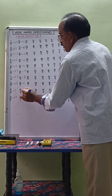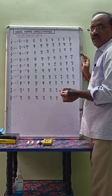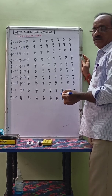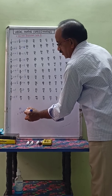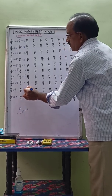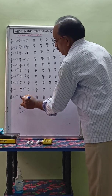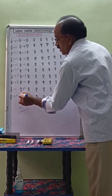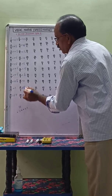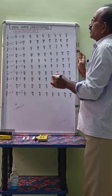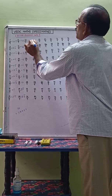19 by 9 equals 2.1 bar. Sum of the digits, digital sum: 1 plus 0 equals 1, that means 2.1 bar. 20 by 9 equals 2.2 bar. Sum of the digits, digital sum: 2 plus 1 equals 3. 21 by 9 equals 2.3 bar.